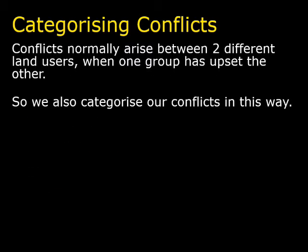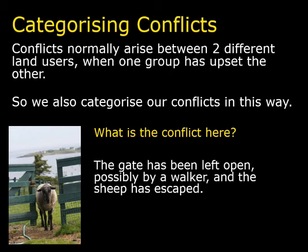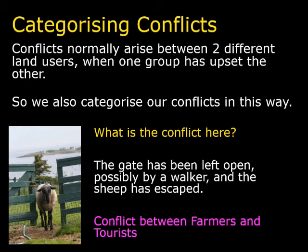We categorise our land use conflicts in similar ways between these two groups. Have a look at this conflict — what does this picture show us? The gate has been left open, possibly by a hill walker, and the sheep has escaped. The conflict is between farmers and tourists: the tourist has come through, left the gate open, and the farm animals have escaped, so the farmer has to spend his time going to get the sheep back in the field.